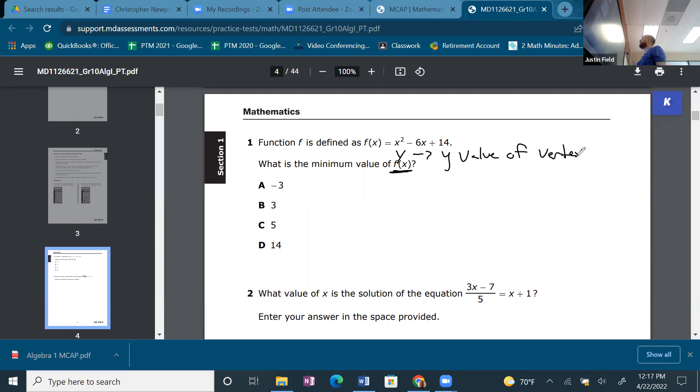Which most Algebra 1 students should be able to know because it's quadratic season. So x = -b/2a will get us the x-coordinate. So a = 1, b = -6, c = 14. And so -(-6)/(2 × 1) is going to be 6/2 or 3.